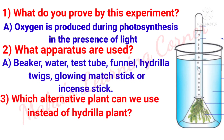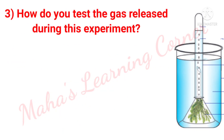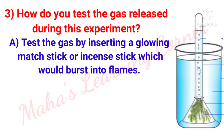Which alternative plant can we use instead of hydrilla plant? The correct answer is elodia. How do you test the gas released during this experiment? Answer: Test the gas by inserting a glowing mass stick or incense stick, which would burst into flames.